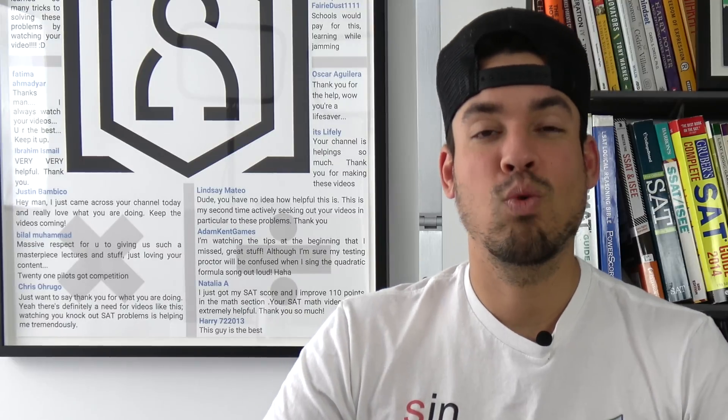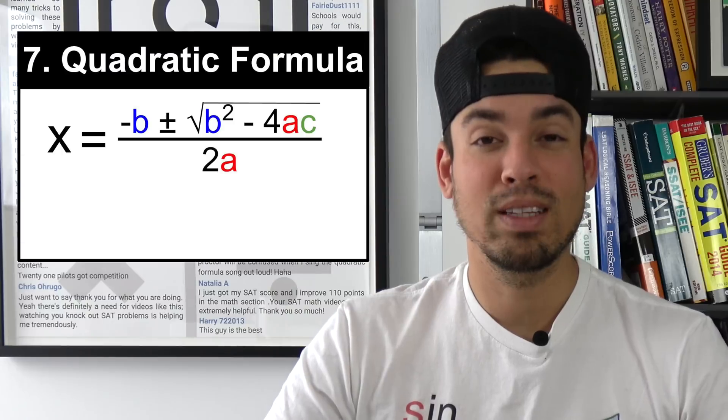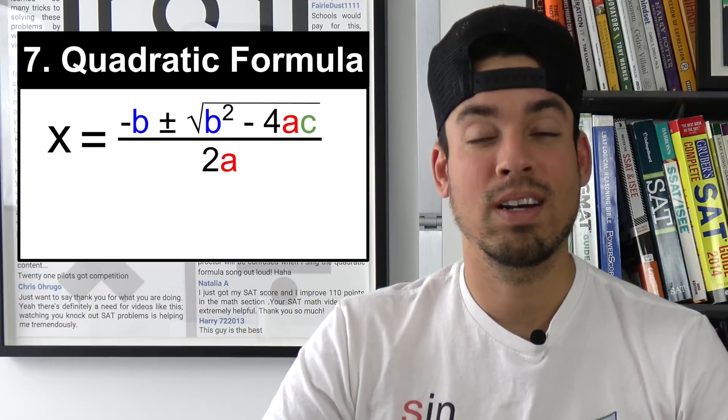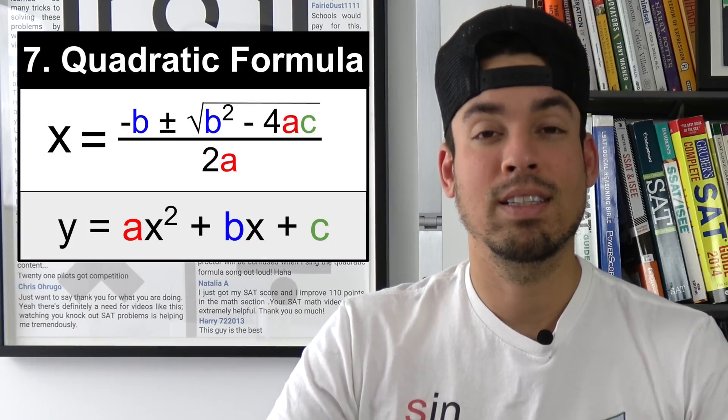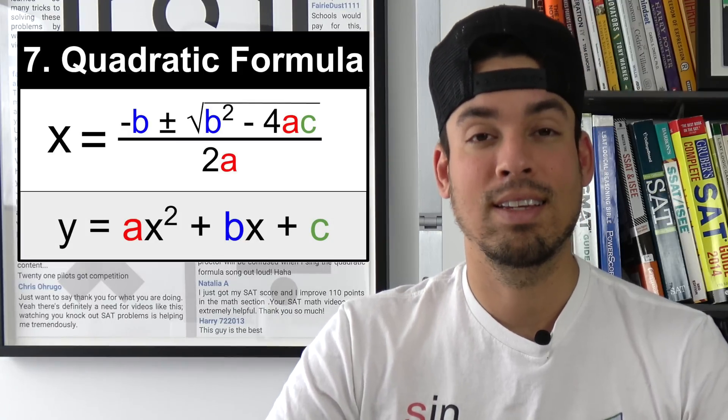Next on the list is the quadratic formula. Now this is a really famous formula and it helps you to find the roots of a quadratic function which means you're finding the spots where it intersects the x-axis.